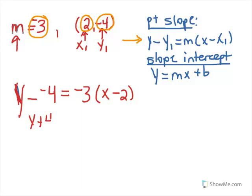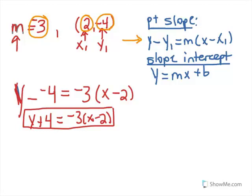How do we get it into slope-intercept? Well, to get into slope-intercept, we need to solve for y. To solve for y, first thing I want to do is I'm going to come over to the right-hand side and distribute the negative 3.